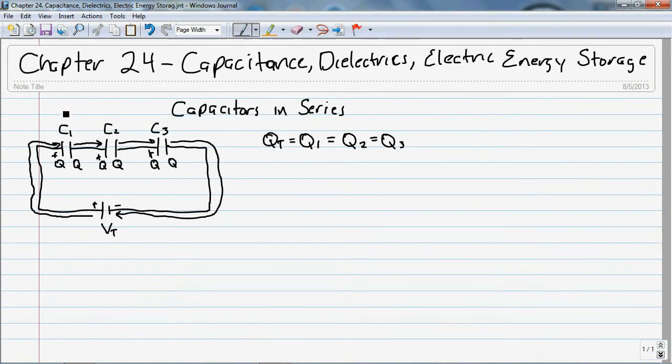So, if I represent the potential across capacitor 1 as V1, the potential across capacitor 2 is V2, and the potential across capacitor 3 is V3, then because I have to be able to get a total of the potential across each of the three capacitors, I know that VT is equal to V1 plus V2 plus V3.